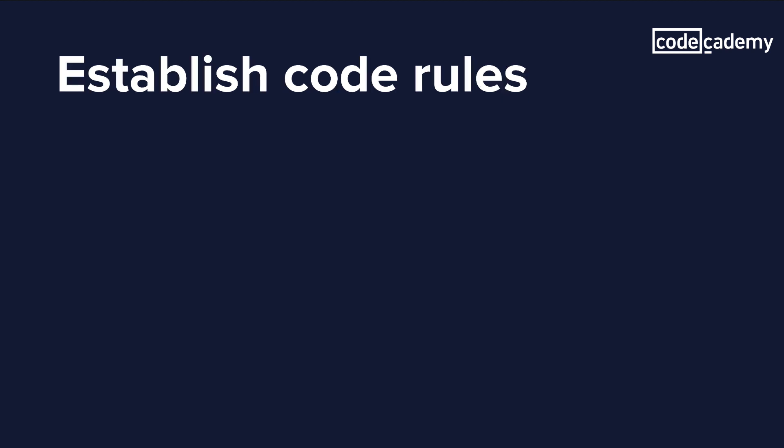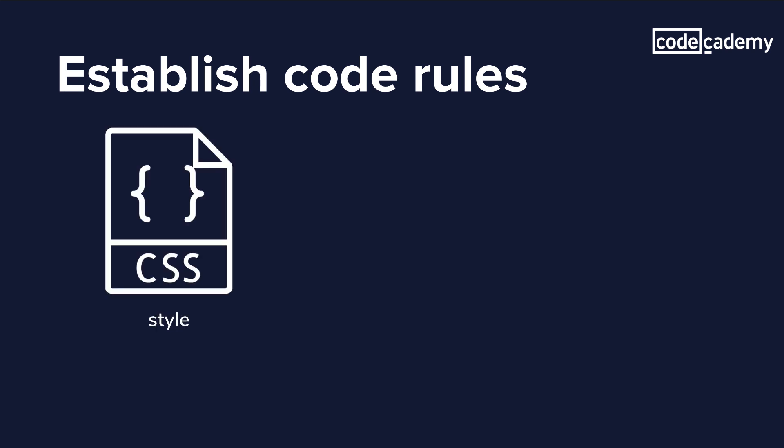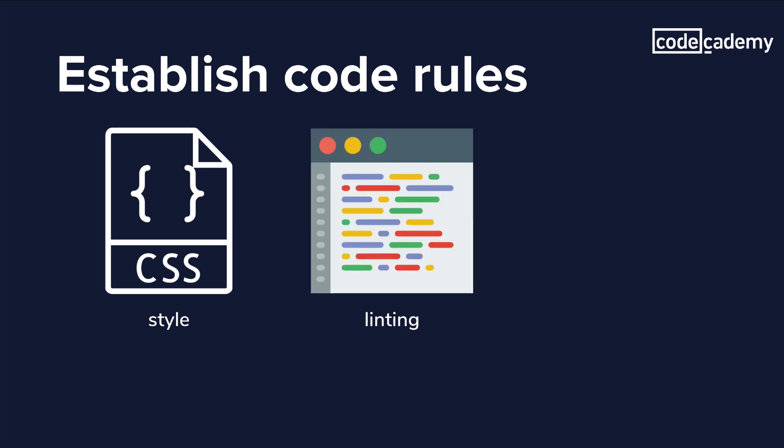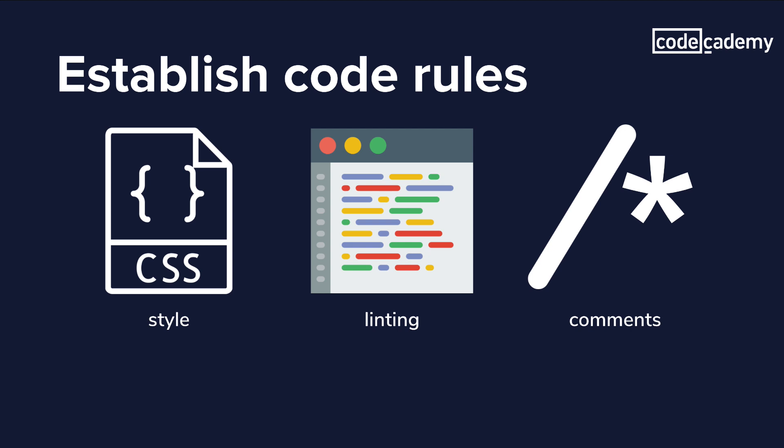Code bases also allow you to establish rules. For example, you can create a style guide, and then all the components or user interfaces within that code base can adopt the same consistent style. You can also enforce linting rules — linting covers things like how the code is written, how many spaces are between different parts of the code, whether the code uses camel case or snake case, whether the code has comments in it, and so on. Because you have this centralized code base, you can establish rules for all of these things and make sure everything is consistent.